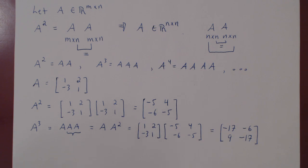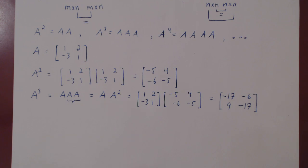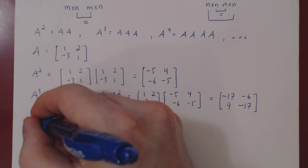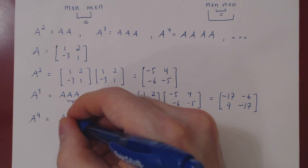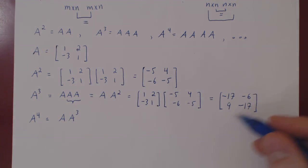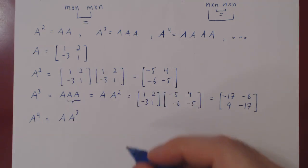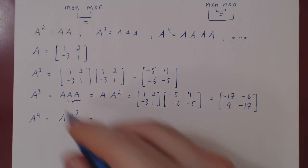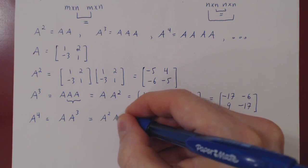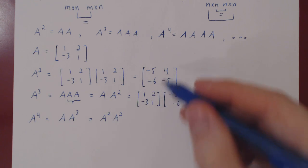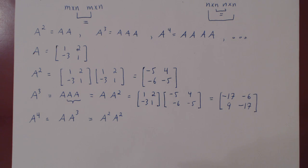We could do A⁴ in the same way. We won't compute it, but just as a side note, we could compute A⁴ in two different ways. If you think of it, we could do A times A cubed. We have A cubed, here's matrix A. Or we could also do the square of A squared. We could do A squared times itself, and we would get A to the 4. And that's it. This is how you can take powers of any square matrix.